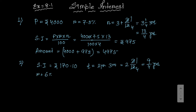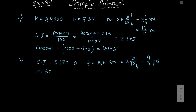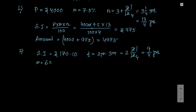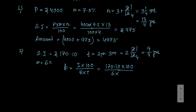Here rate equals 6 percent, and you have to find the principal. Since interest equals P times R times T divided by 100, rearranging gives P equals interest into 100 divided by R into T.